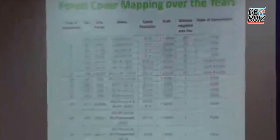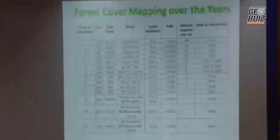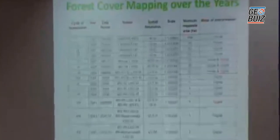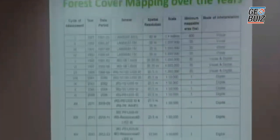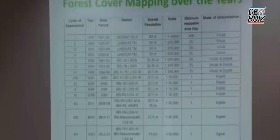Before starting, forest cover is one of the natural resources in the country and an important component where forest fires occur. I will discuss how we are using satellite remote sensing technology for forest cover mapping at national level. You can see the tabular statement where we have been using this data for the last few years, starting from 1987, and recently in December 2015 we came out with the latest statistics for forest cover for the year 2015.